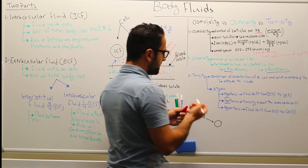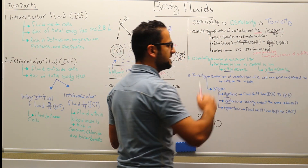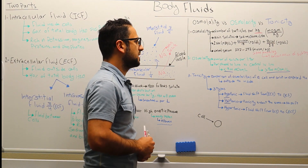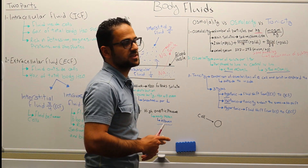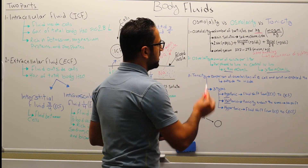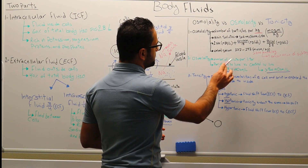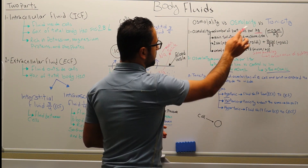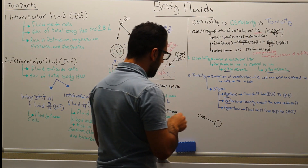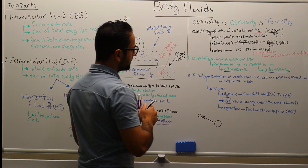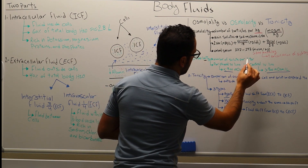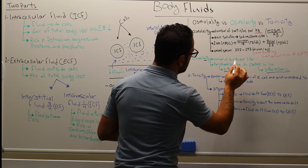Vice versa, if the value is lower than 277 — say 250 — this means they're having a lower concentration of solutes in the body. In comparison, osmolarity is the number of solutes per liter, so osmolarity is always per liter, whereas osmolality is always based on weight, per kilogram.